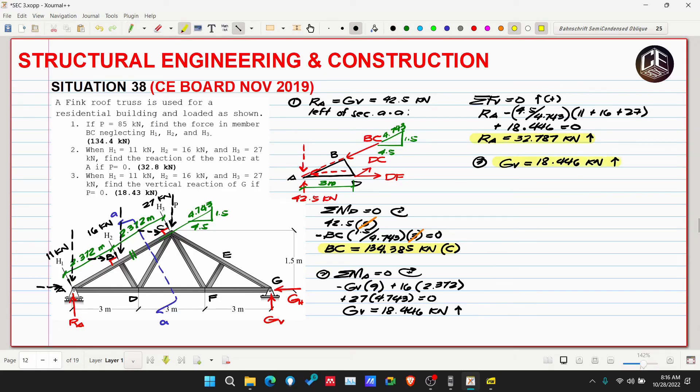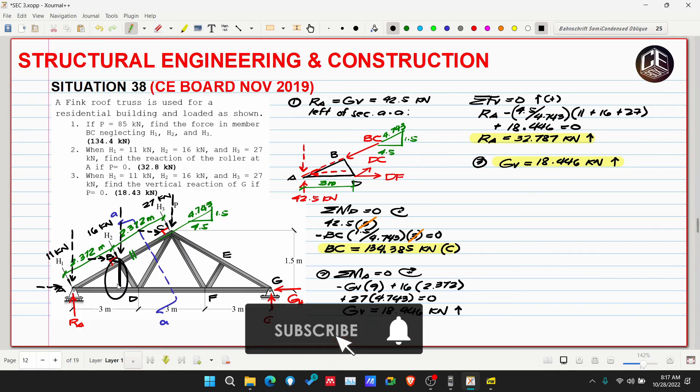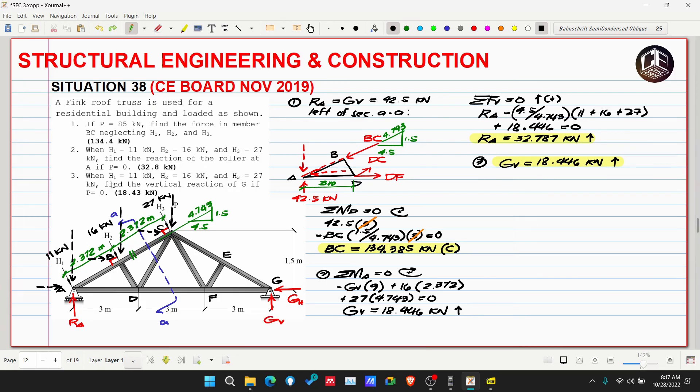This is very simple - just truss analysis using method of sections for number one. Number two and three are simple reaction solving. It would be more challenging if you insisted on taking moments at G to get RA directly - that would take longer. If problem three asked for the horizontal component at G, that's easy too.